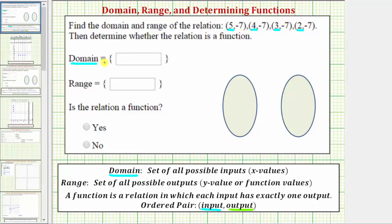When we write the domain, we use these braces and we should list the values in order from least to greatest. So the domain is the set containing two, three, four, and five.